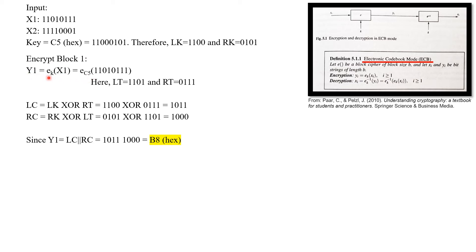We will split the input X1 into its LT and RT. Since we know that LC is equal to LK XOR RT, we get the binary result 1 0 0 0 0 0. Therefore we get the output Y1, which is the combination of LC and RC, as B8 in hexadecimal.